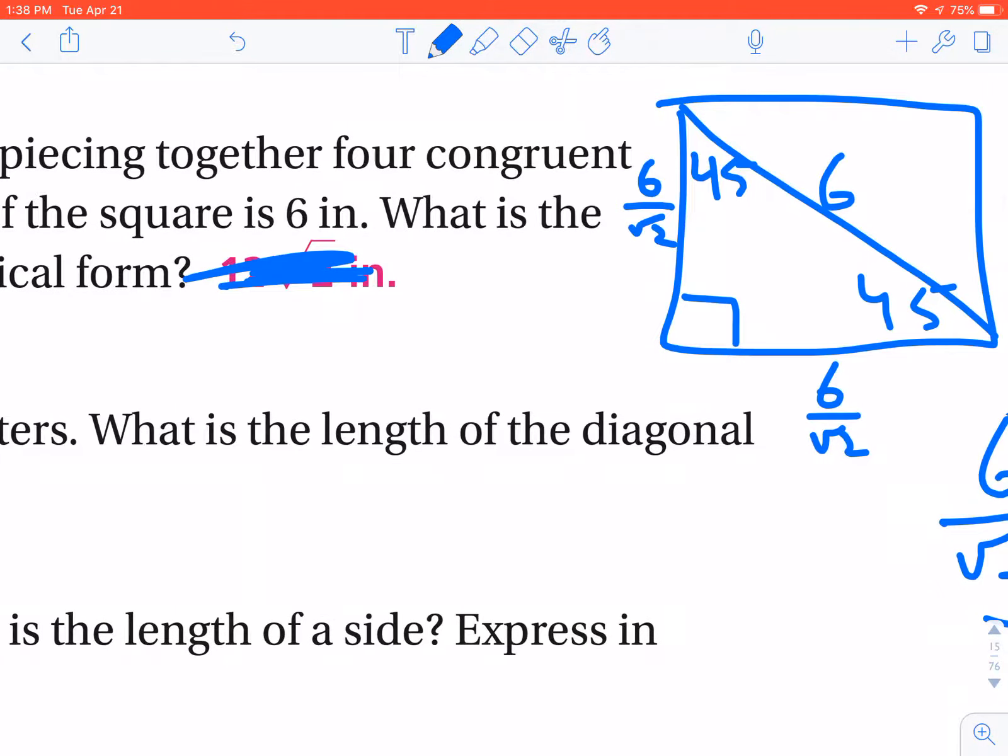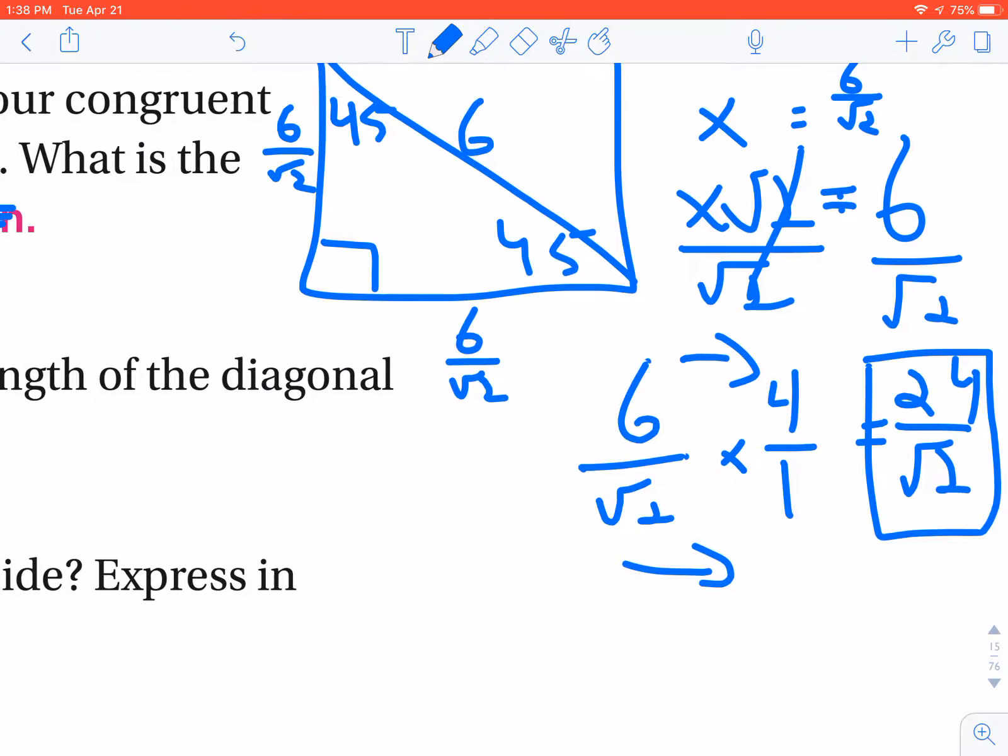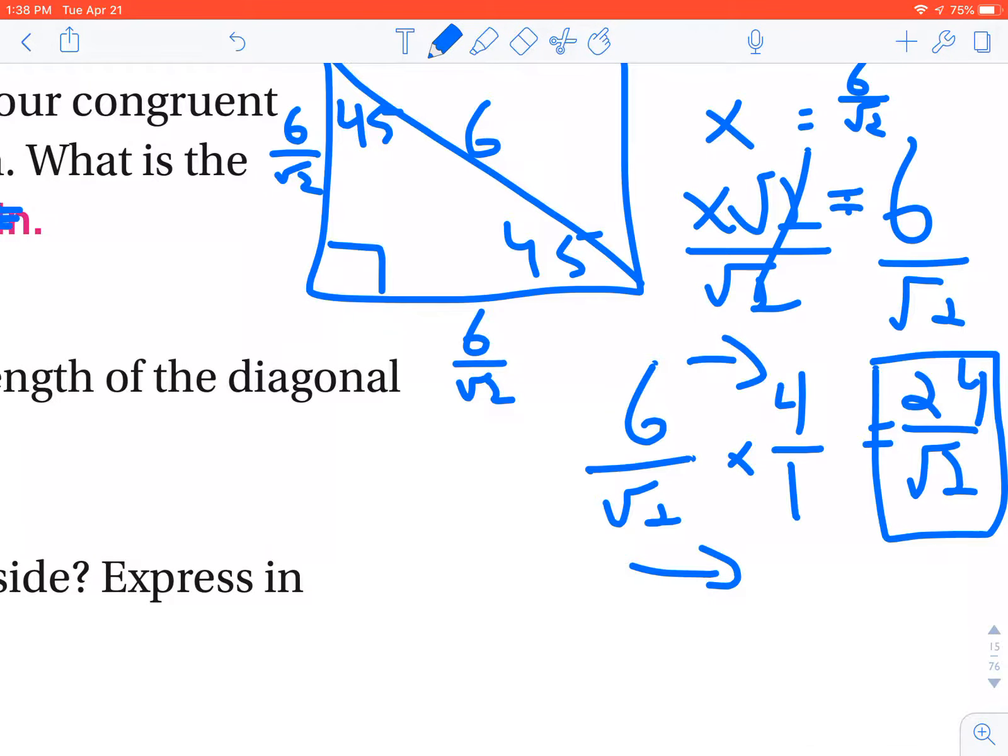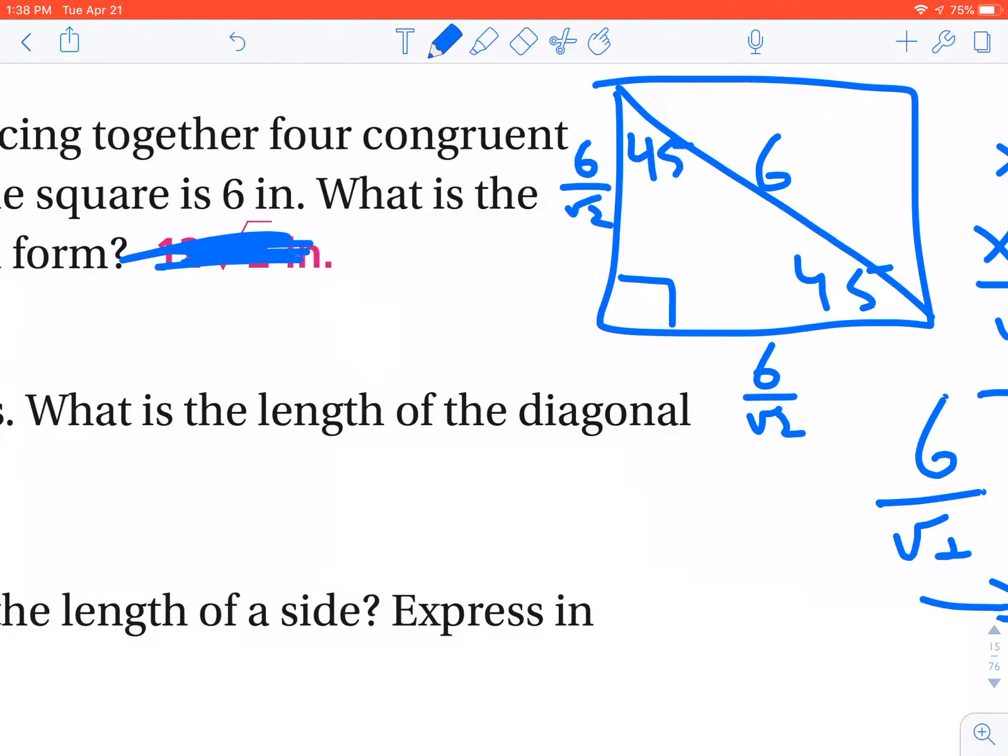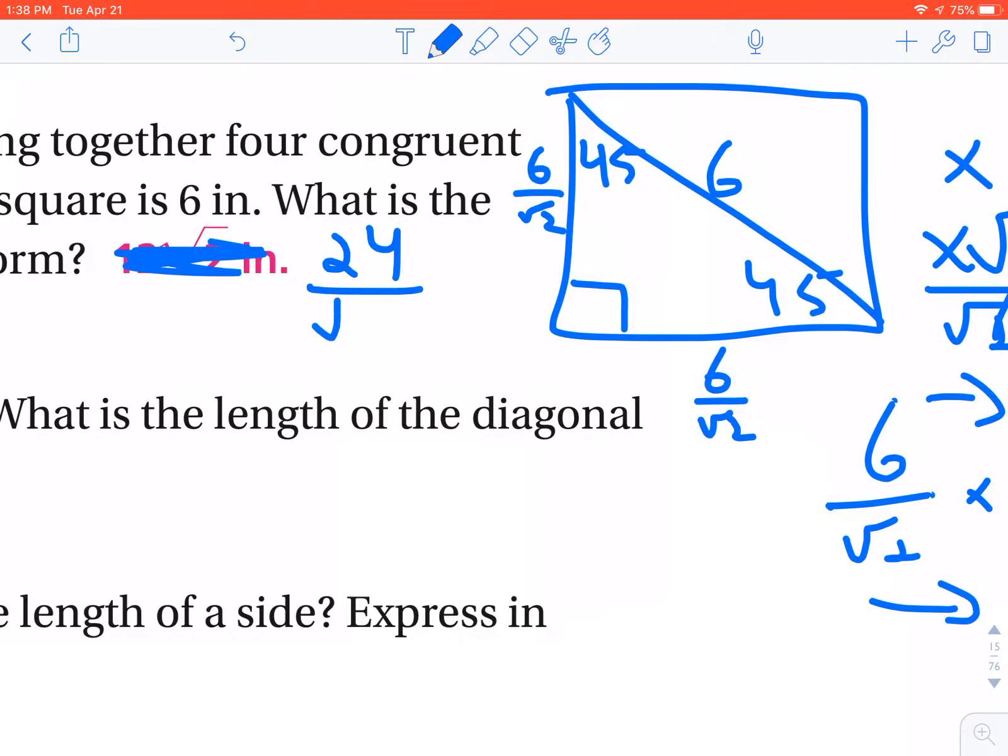So this is a little bit different of an answer than what they gave. If you were to type both of these numbers in your calculator, both the 24 over radical 2 and the 12 radical 2, the decimal that you would get would be the exact same. Okay, so this is not the answer I would expect you to get. It would be 24 over radical 2, and I apologize for that.